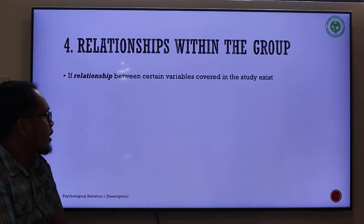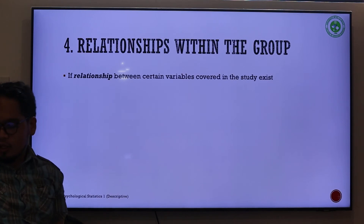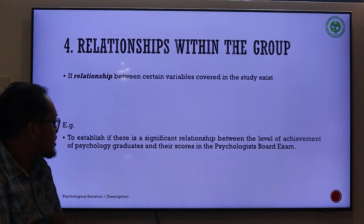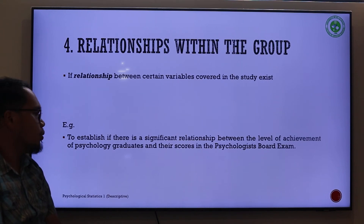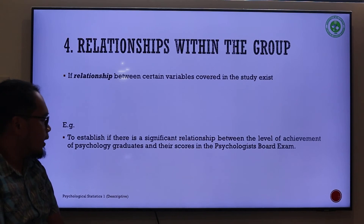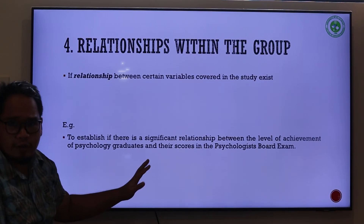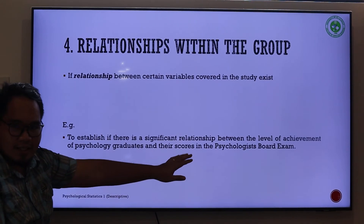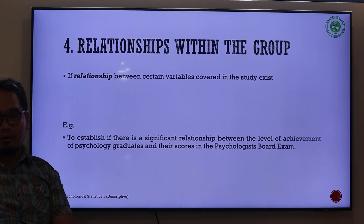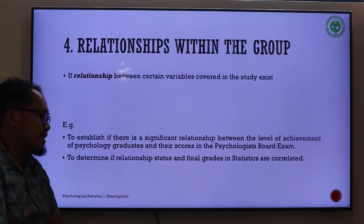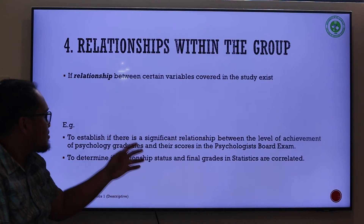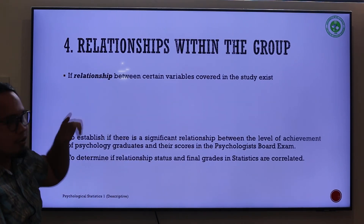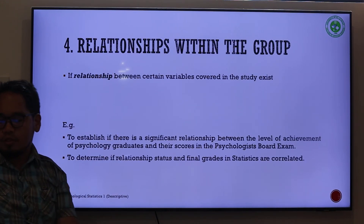The fourth analytic goal, also under inferential analysis, is relationships within the groups. This is used to determine if there are relationships between certain variables covered in the study. Examples include establishing if there is a significant relationship between the level of achievement of psychology graduates and their scores in the psychologist board exam, and determining if relationship status and final grades in statistics are correlated — essentially, does being in a relationship have a bearing on your grades in statistics?